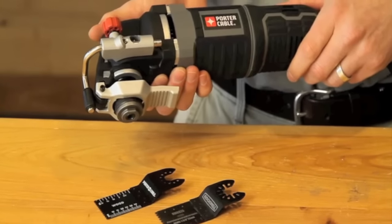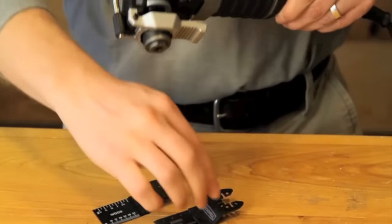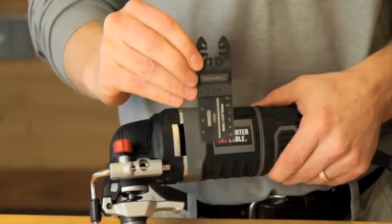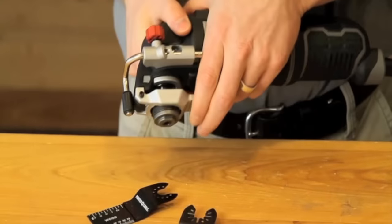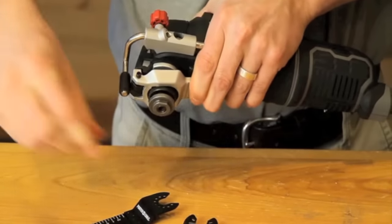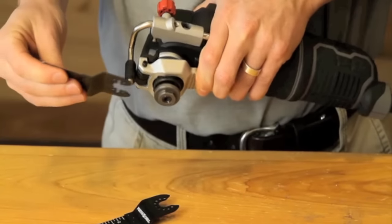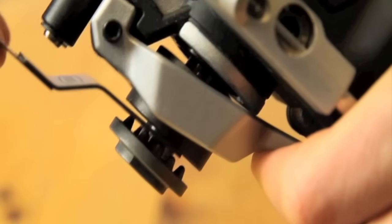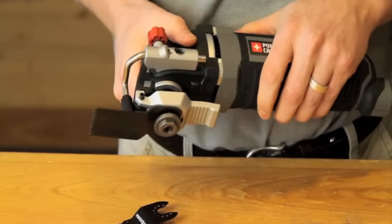Now if you're the owner of a Porter Cable oscillating tool, all the universal fit accessories by Rockwell also fit on your tool. To change the blade, just squeeze on the lever here just like with the Porter Cable accessories. Put the blade in place and you're ready to make your cut.